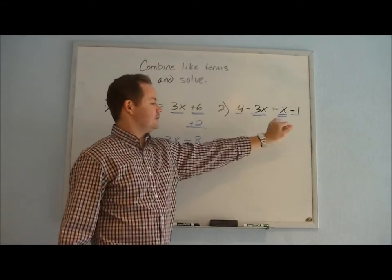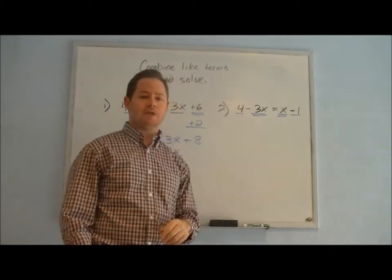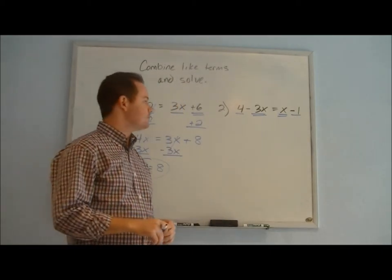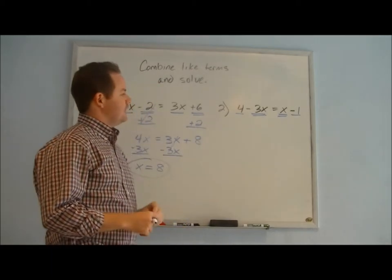We see these are like terms—they both have an x in them. And these are like terms—the 4 and the negative 1 are constants or numerical values. If we were to go left to right in this one...